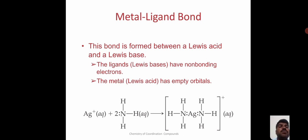Metal-ligand bond: this bond is formed between a Lewis acid and Lewis base. The ligands have non-bonding electrons. The metal has empty orbitals. This is the example of metal-ligand bond. Silver reacts with 2 moles of ammonia to form the metal-ligand bond.